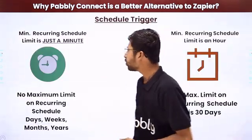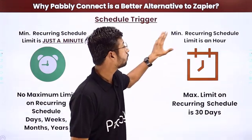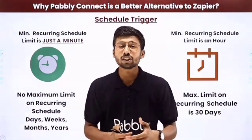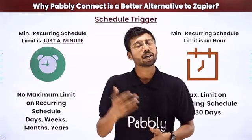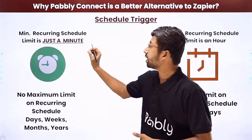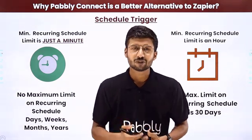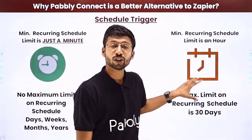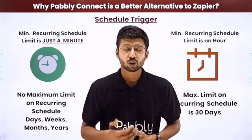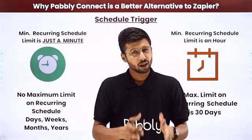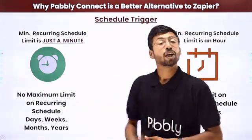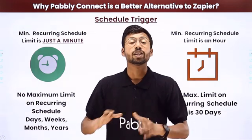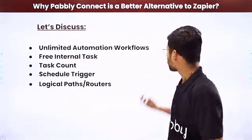The next point is the schedule trigger. In Zapier, the minimum recurring schedule time is one hour, so you cannot schedule workflows to run every 15, 30, or 45 minutes. In Pabbly Connect, the minimum recurring schedule limit is just one minute. Also, Zapier's maximum schedule limit is 30 days, whereas in Pabbly Connect there is no such limit — you can schedule workflows to run at any point in the future.